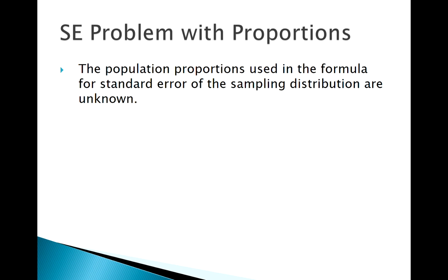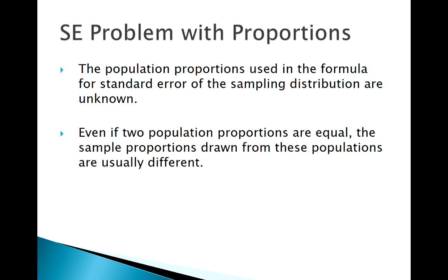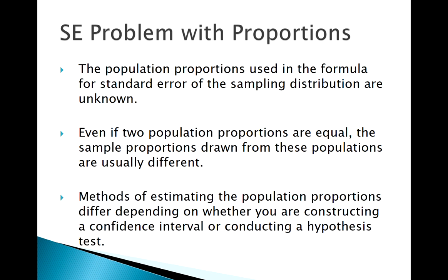When dealing with proportions we run into an issue: p is included in its own standard error. With one sample we saw how to handle that problem, and for constructing a confidence interval we'll handle it very similarly. Remember we've got p1 and p2 — two different proportions we're estimating. Even if p1 and p2 are the same, if we take two different samples, p1-hat and p2-hat will probably differ. The way we solve this problem is different depending on whether we're constructing a confidence interval or a hypothesis test.